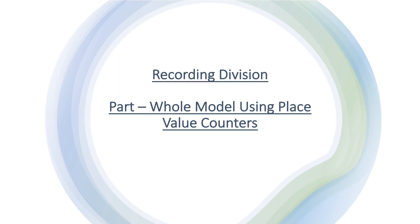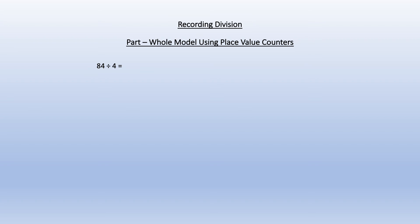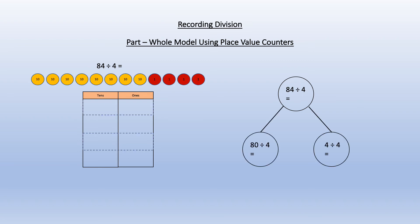I'm now going to show you the part-whole model using place value counters to teach division. Here we have 84 divided by 4. I draw a grid with tens and units and then in a circle write the question 84 divided by 4. Then with my place value counters I partition the 84 into 8 tens and 4 units. So I have 8 yellow tens and 4 red 1 counters.